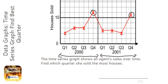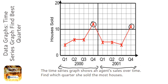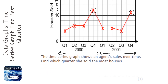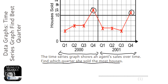Next we need to work out what the scale is. It seems to be going up in twos — let's just check: 16, 18, 20. A really common mistake is to write down the answer as 11, but it's not 11, it's going to be 12 for the top one. But the question says which quarter she sold the most houses.